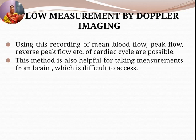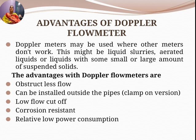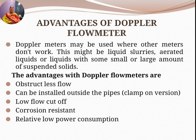Advantages of Doppler flow meters: they may be used where other meters don't work, such as with liquid slurries, aerated liquids, or liquids with suspended solids. They obstruct flow very little, can be installed outside the pipes, have low flow cutoff, are corrosion resistant, and have relatively low power consumption.